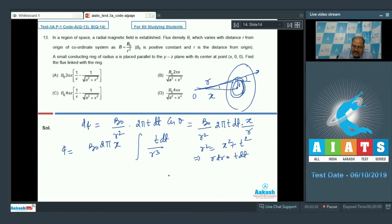And the integral will then become B0 into 2 pi X dr by R square. The value of R goes from X to this point, it will be under root of X square plus A square. Solving, we will find this is equal to B0 into 2 pi X multiplied by 1 upon X minus 1 upon under root A square plus X square, which matches with option A. So, option A is correct. Let us go to the next question now.